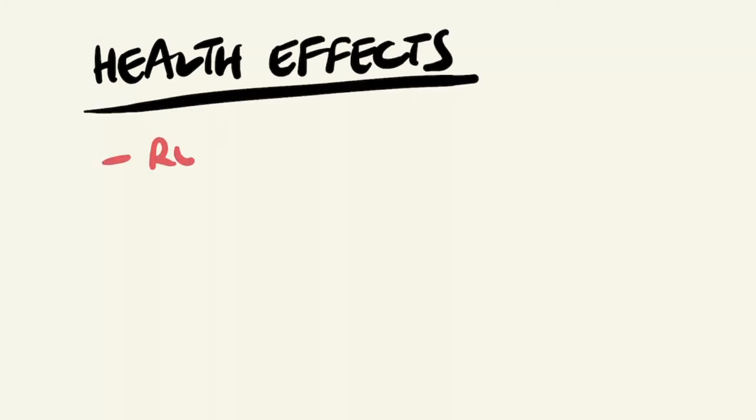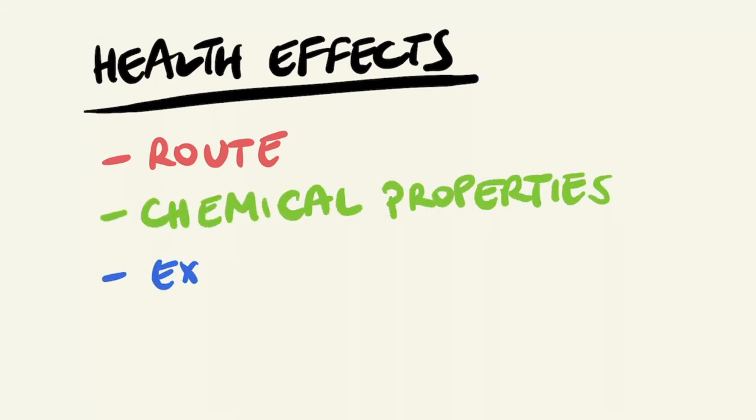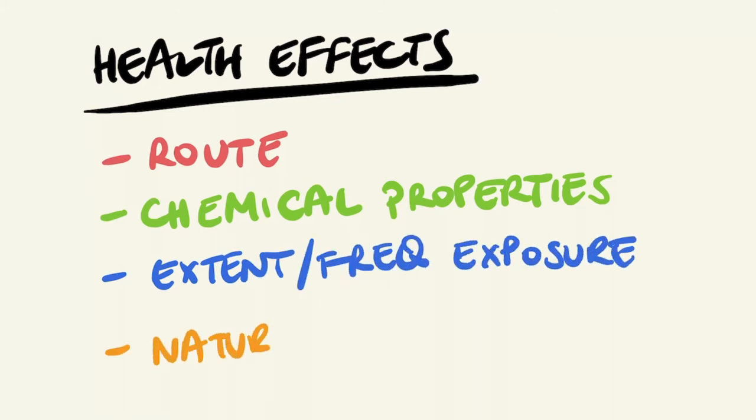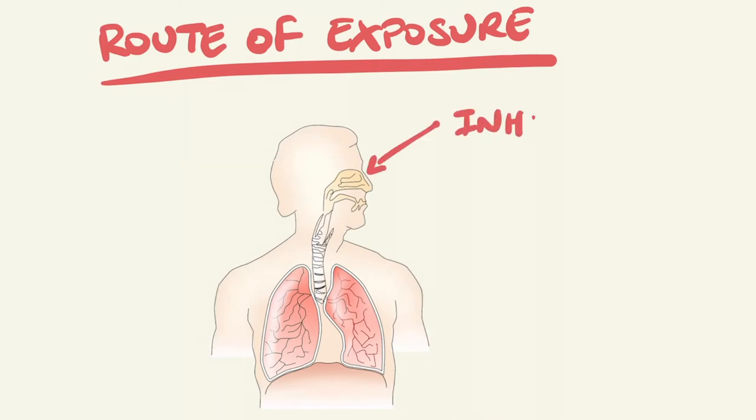The health effects of a chemical exposure can be varied and depends on a number of factors including the route of exposure, the chemical properties of the substance, extent and frequency of the exposure, as well as the nature of the work itself. The particular route of exposure can have varying effects on the body, and common routes include inhalation.